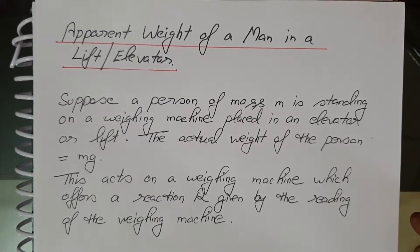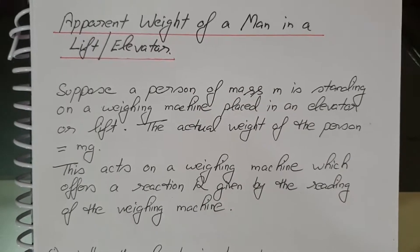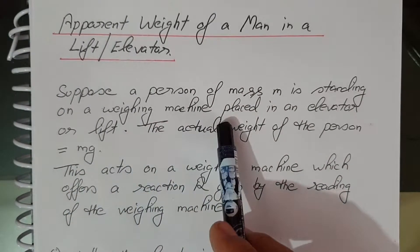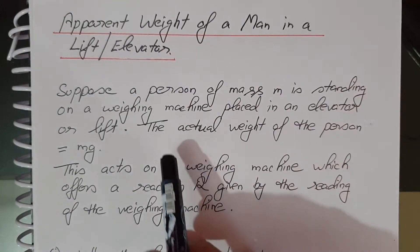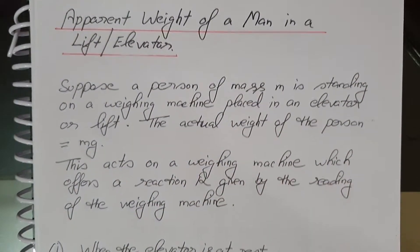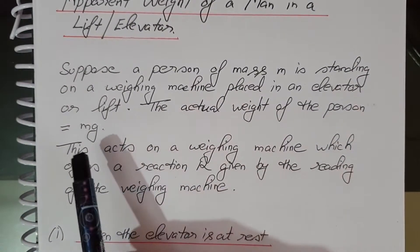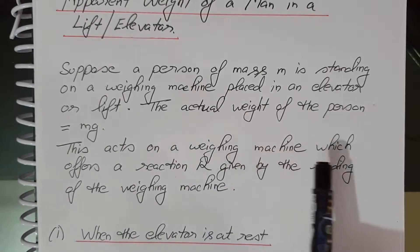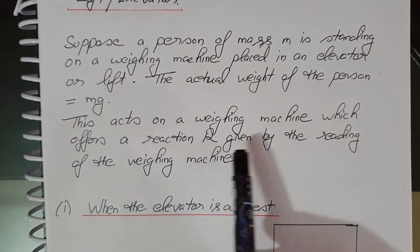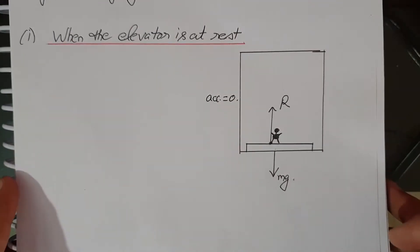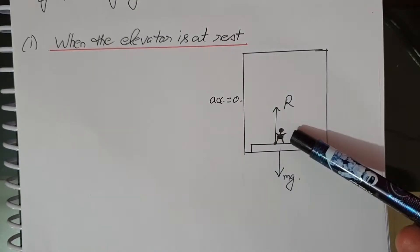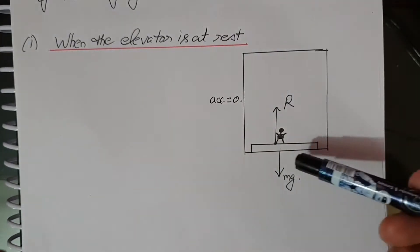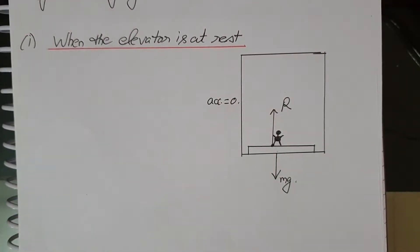Apparent weight of a man in a lift or elevator. Suppose a person of mass M is standing on a weighing machine placed in an elevator. The actual weight of the person is mg, which the machine measures. The weight mg acts on the weighing machine, which offers a reaction R given by the reading of the machine. This reaction R exerted by the surface on the person is the apparent weight of the person.